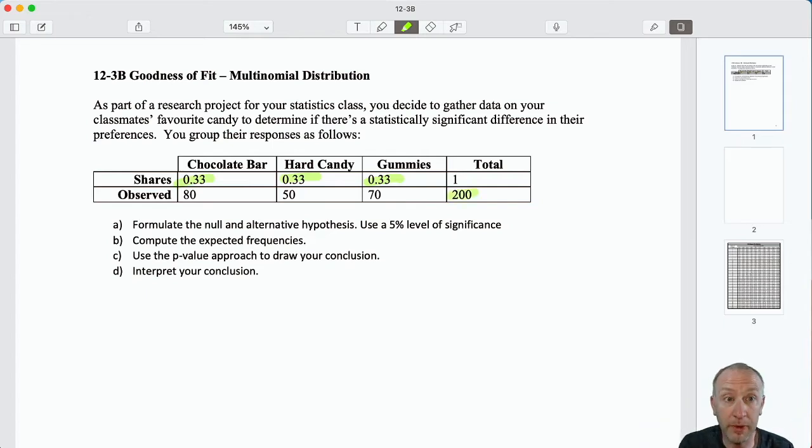So what we are going to be doing first, we'll formulate our null and alternative hypotheses, and then we will have to calculate our expected frequencies, those values that we would expect to see if the null were true.